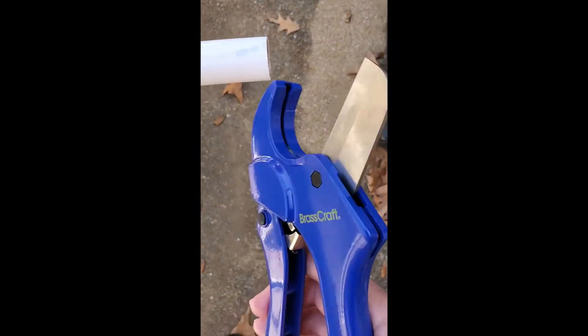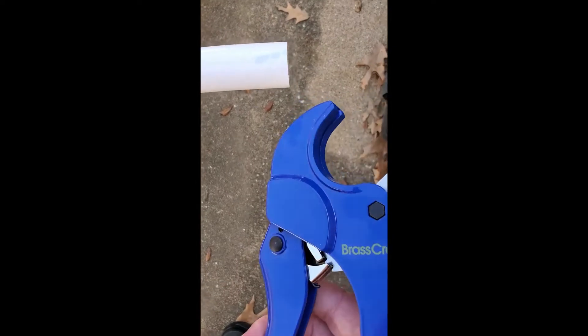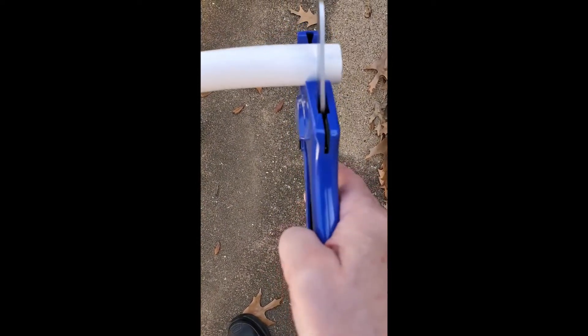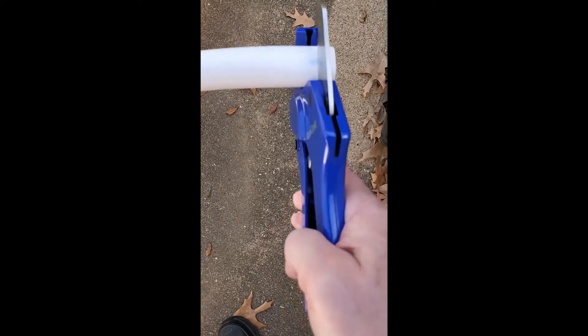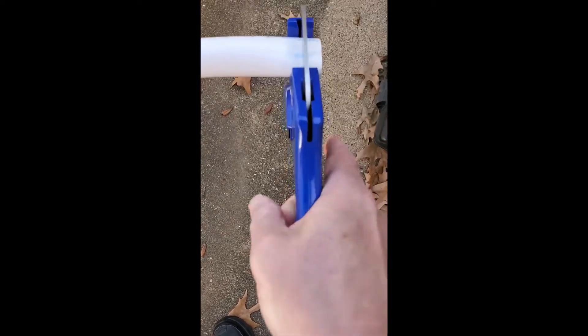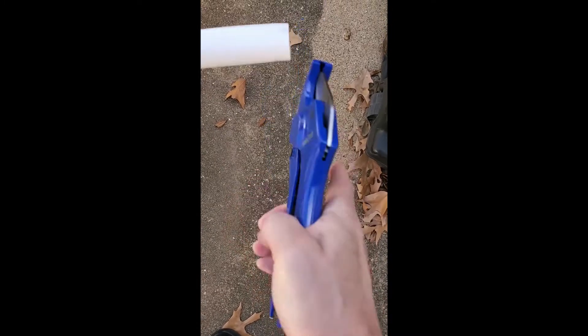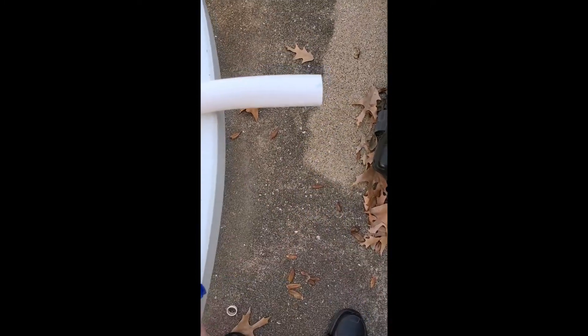A PVC cutter like this is useful for cutting the hose. I'll just with one hand try to get a little bit off of this old piece of hose. There we go, and it's a nice square cut.